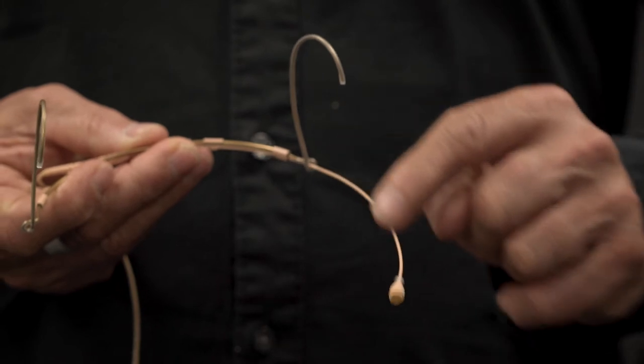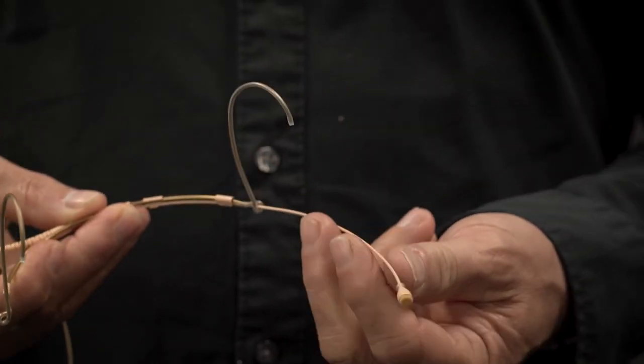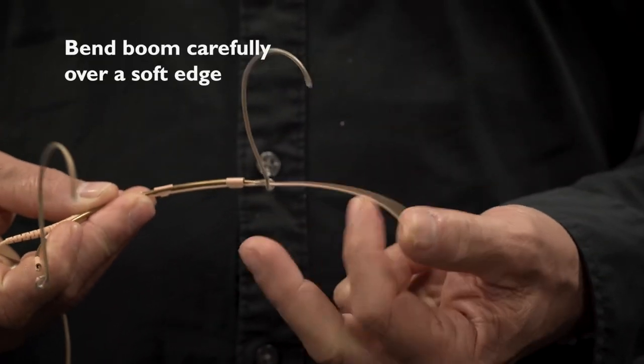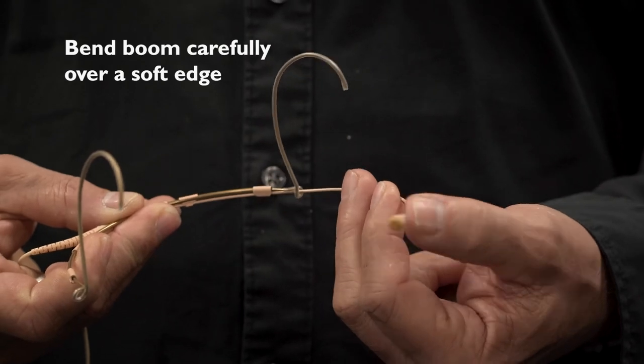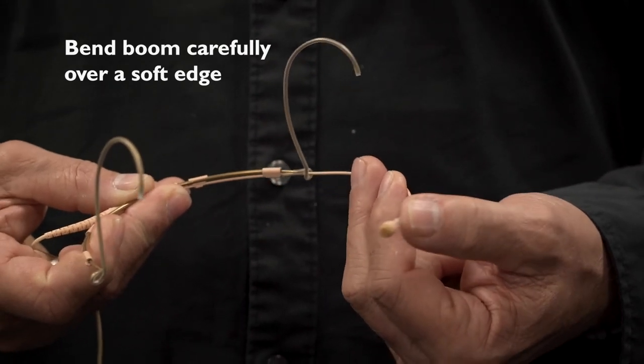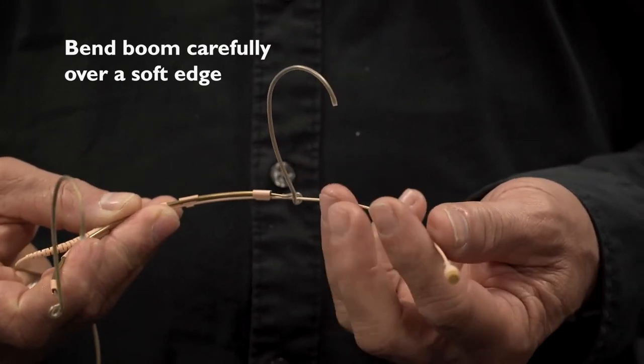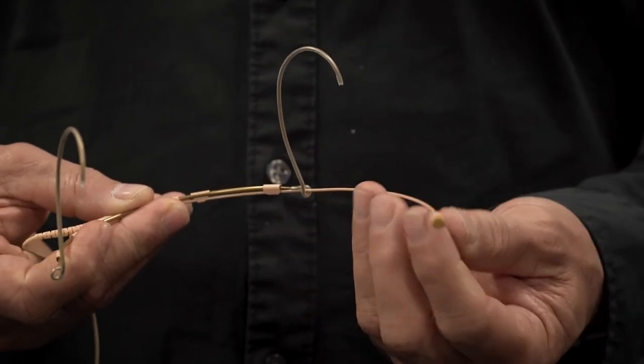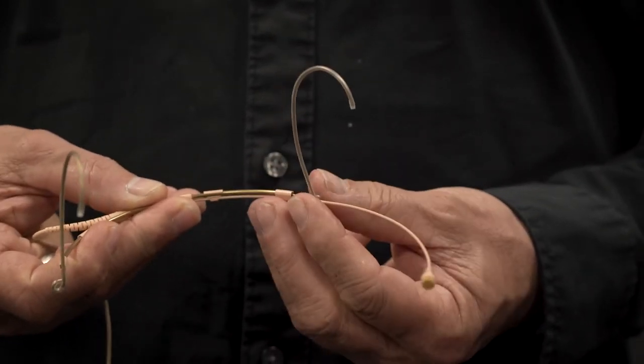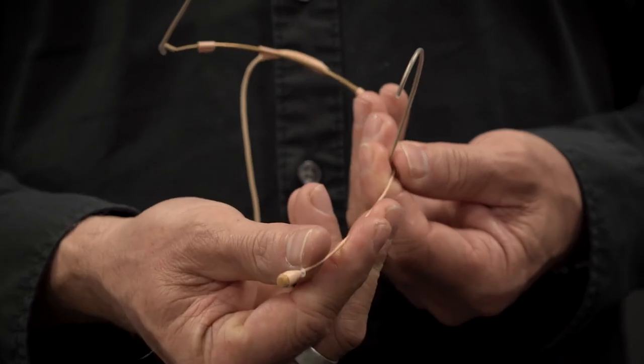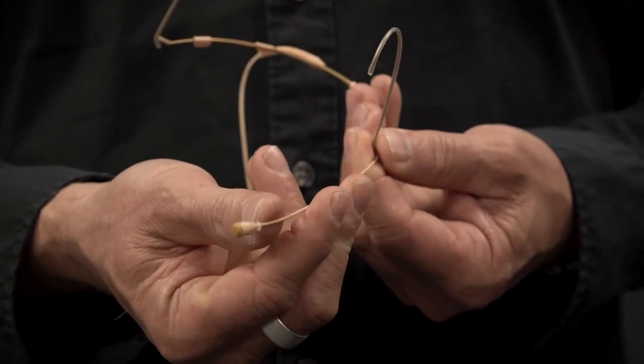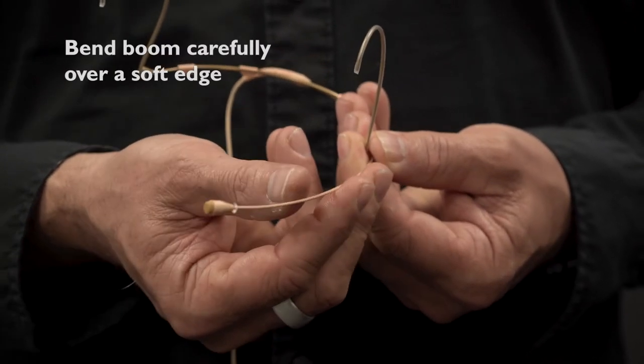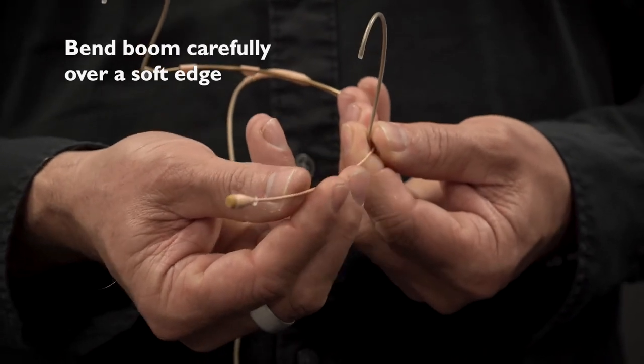If you want to change the curve of the boom, bend it with at least two fingers. You push it with your thumb and counter-hold it with at least two fingers. Also the other way around if you want to straighten the boom: counter-hold it with two fingers and bend it with your thumb.